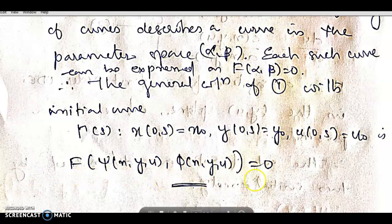Therefore, f(ψ, φ) = 0 represents the general solution of the quasi-linear equation.